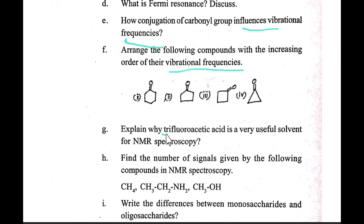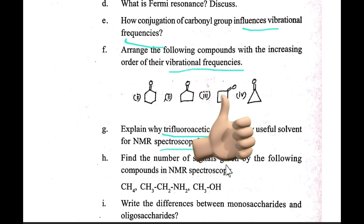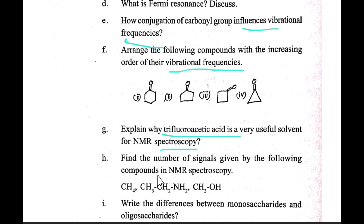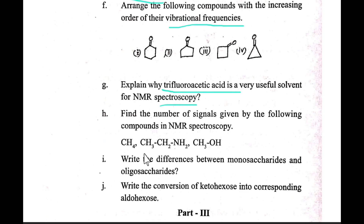Explain why deuterated fluorescent acid is a very useful solvent for NMR spectroscopy. Find the number of signals given by the following compounds in NMR spectroscopy.